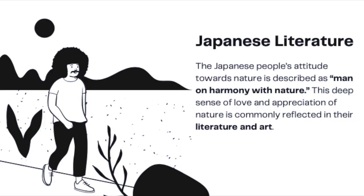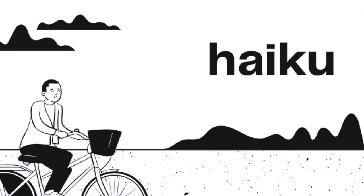The Japanese people's attitude towards nature is described as man in harmony with nature. This deep sense of love and appreciation of nature is commonly reflected in their literature and art. Look at these short Japanese 17-syllable poems called Haiku.